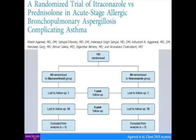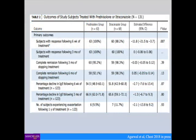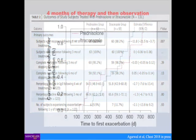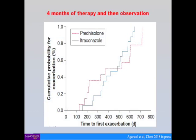A recent randomised study of about 130 patients compared steroids versus itraconazole for ABPA exacerbations, with one to two years follow-up. Response rates were 100% for steroids and 88% for itraconazole — so itraconazole also works for the acute exacerbation, which surprised the authors. Steroids, however, caused many side effects including diabetes. When therapy was stopped in both groups, almost all patients relapsed, but it took two years to relapse — so relapse is not immediate.